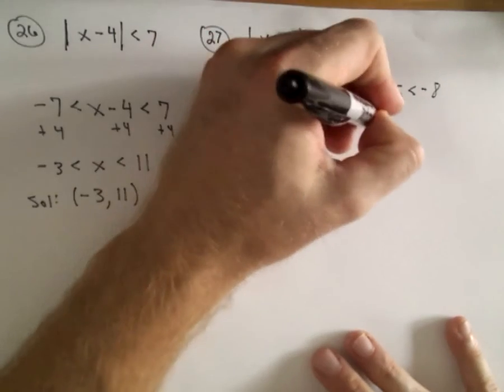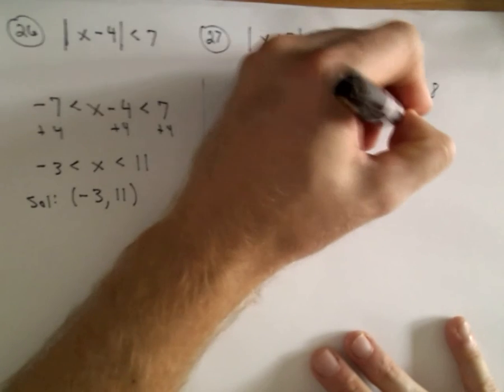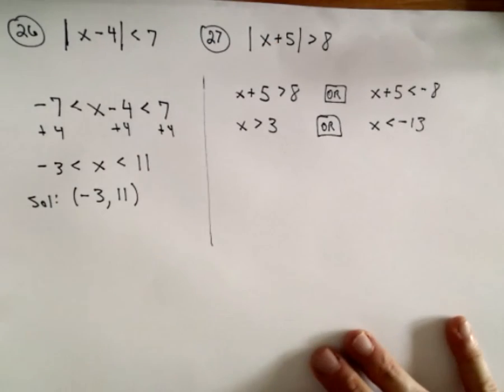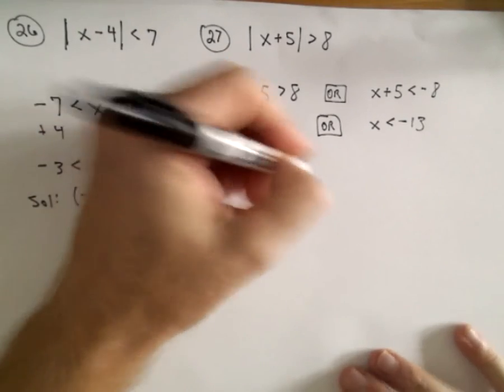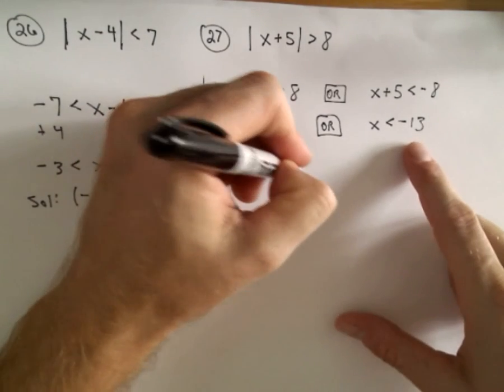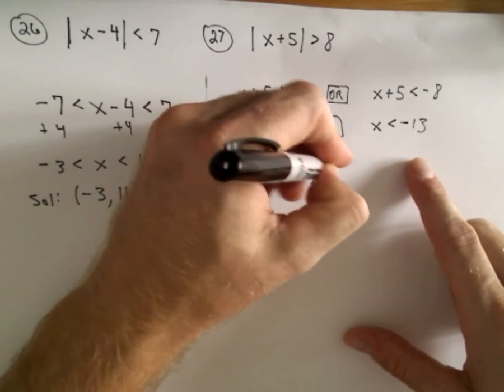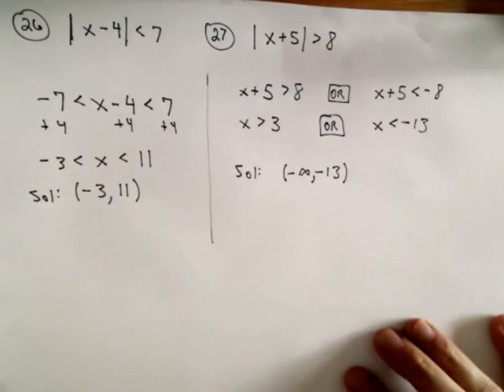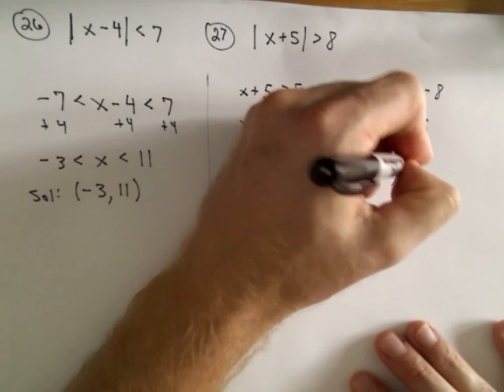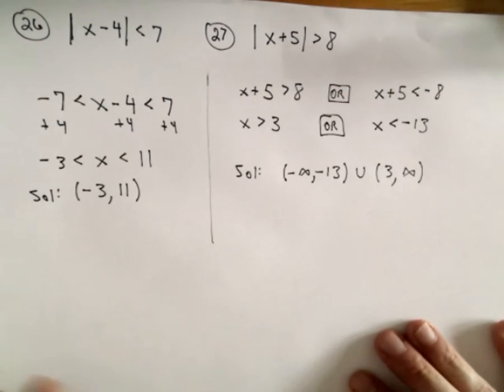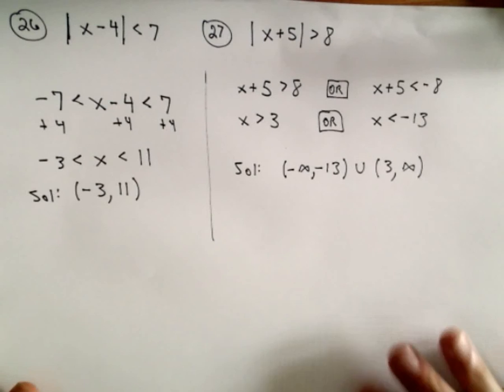We'll get that x has to be greater than 3. Or, subtract 5 from the second inequality, we'll get that x is less than negative 13. So the solution set in this case, for it to be less than negative 13, that's from negative infinity up to negative 13, parentheses. Union, and then it has to be greater than 3, so we'll go from 3 to positive infinity. And there's our solution set.